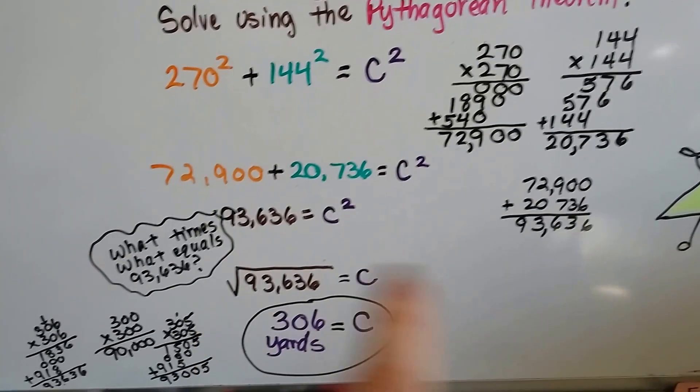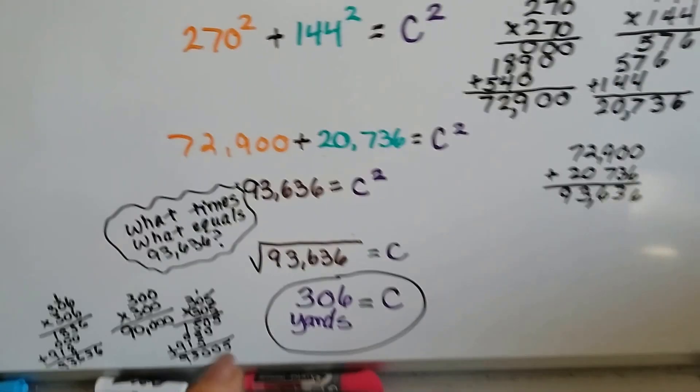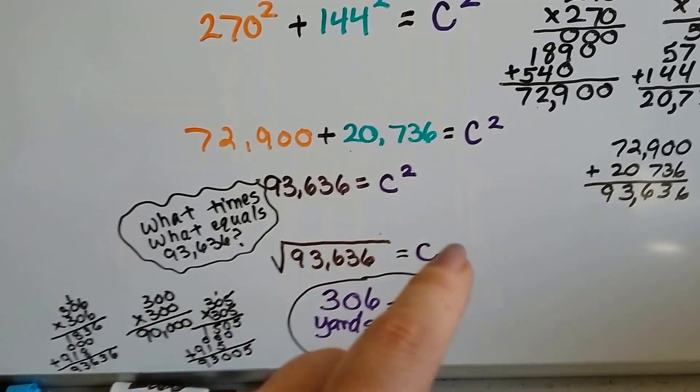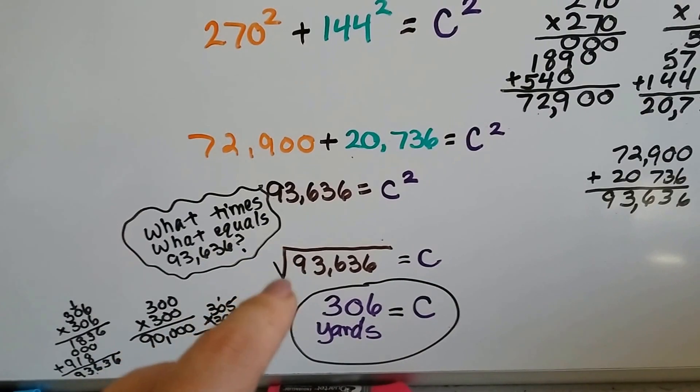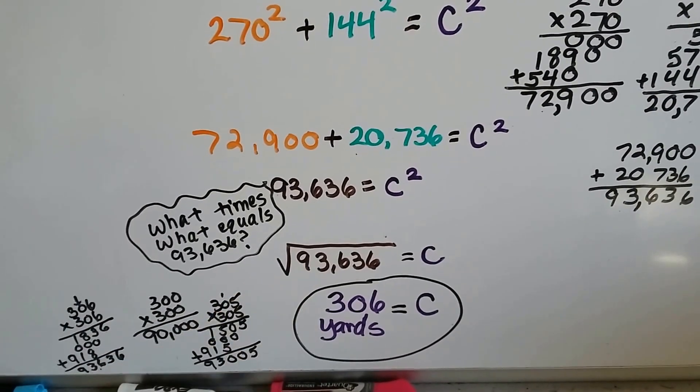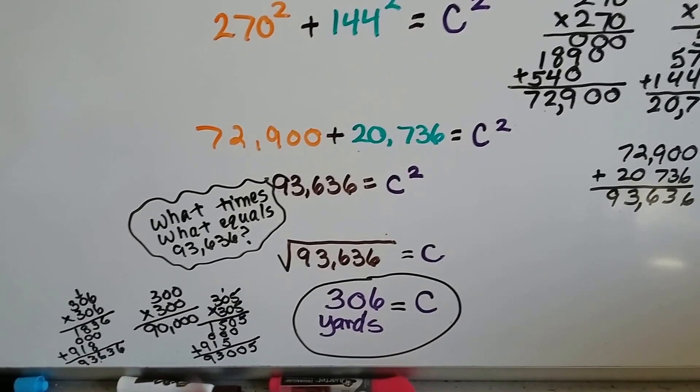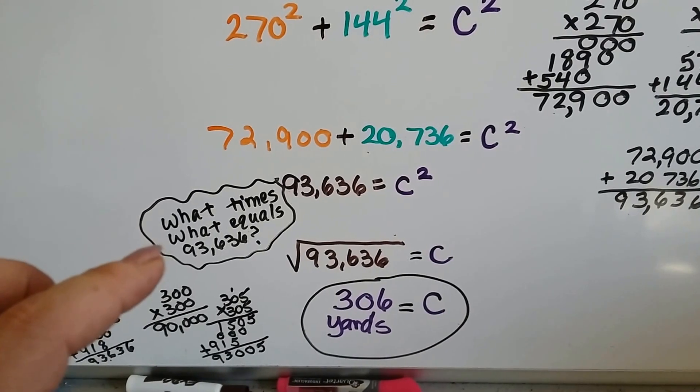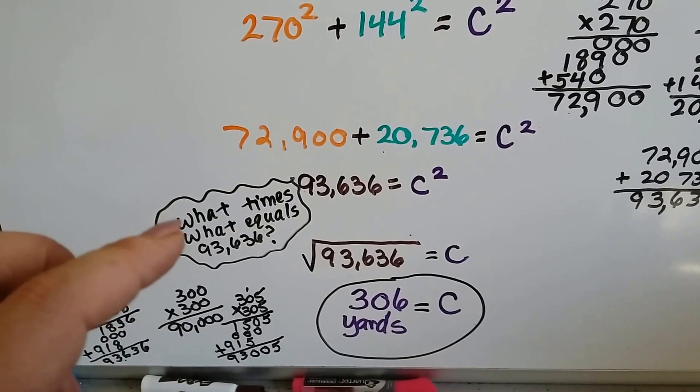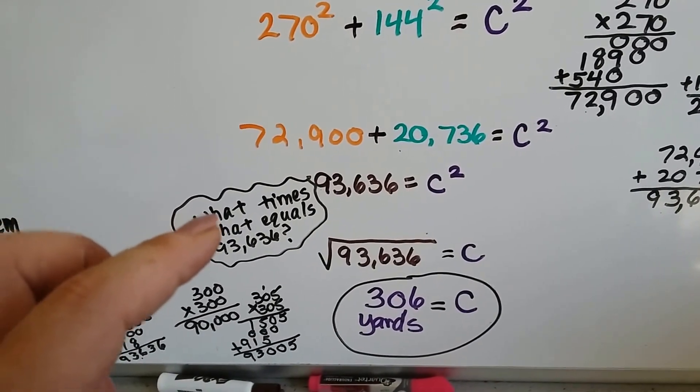So now we have to find the square root of both sides. So we can take this 2 away from the c by putting the radical sign around this side. Remember we talked about that in the last video? We need to find out what times what equals 93,636.